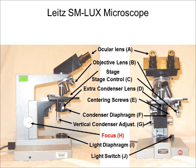On the side of the microscope is the focus knob, which alters the distance between the objective lens and the slide. This is the adjustment that you will be using the most.